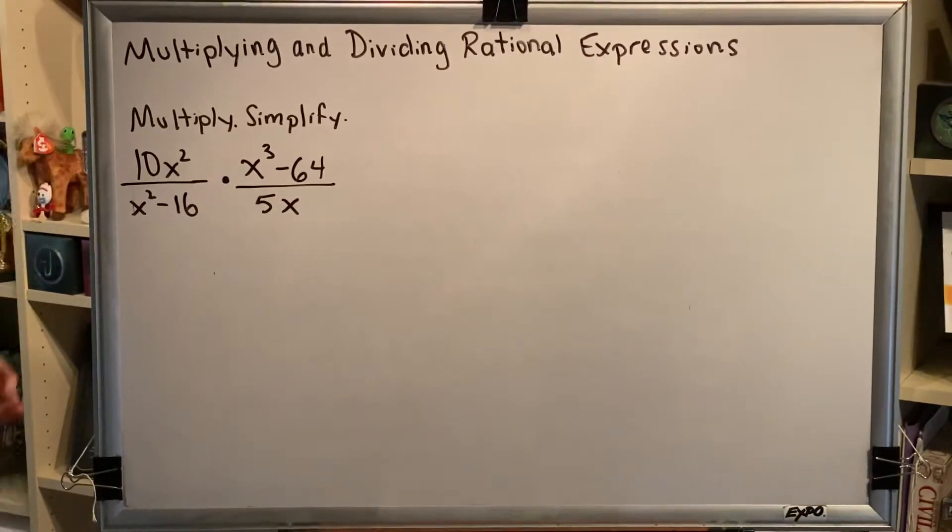Multiply, simplify. We have the fraction 10x² over the binomial x²-16 times the fraction x³-64 over the monomial 5x.